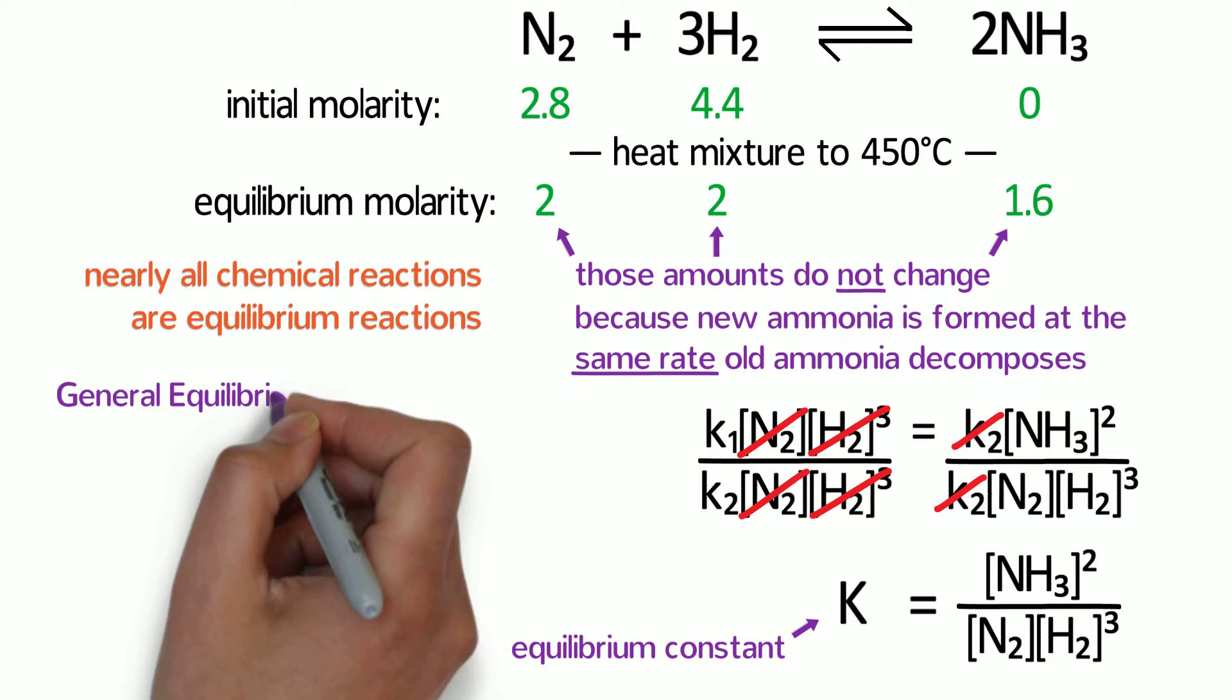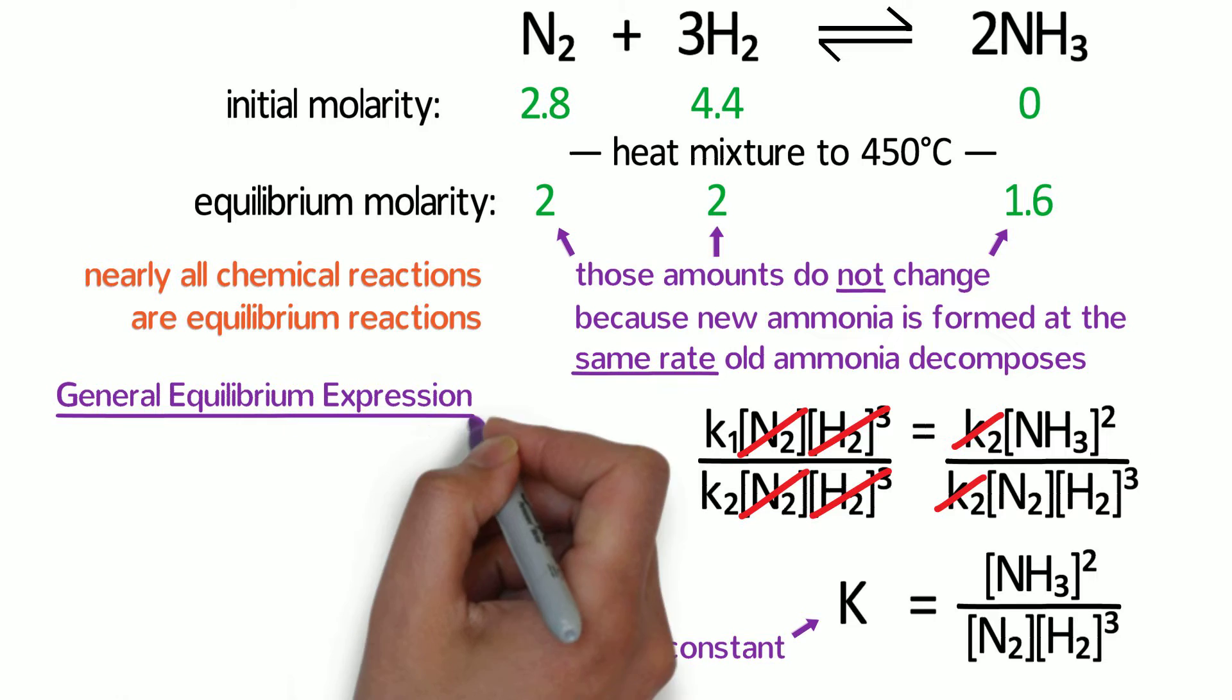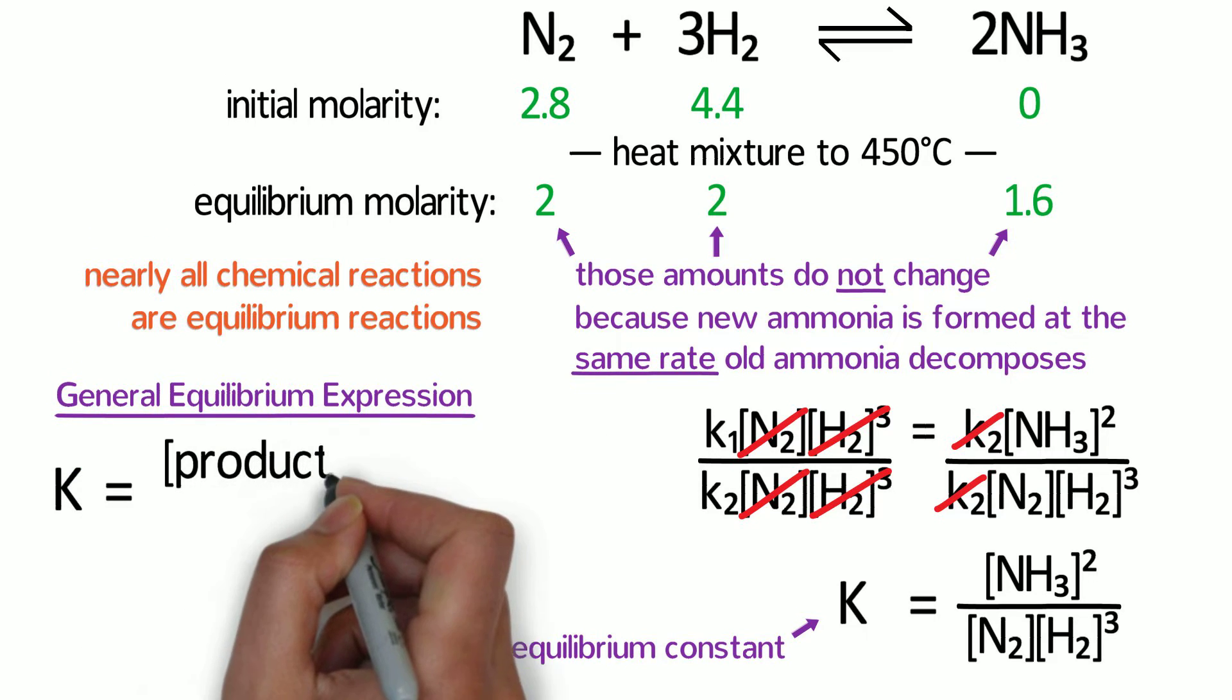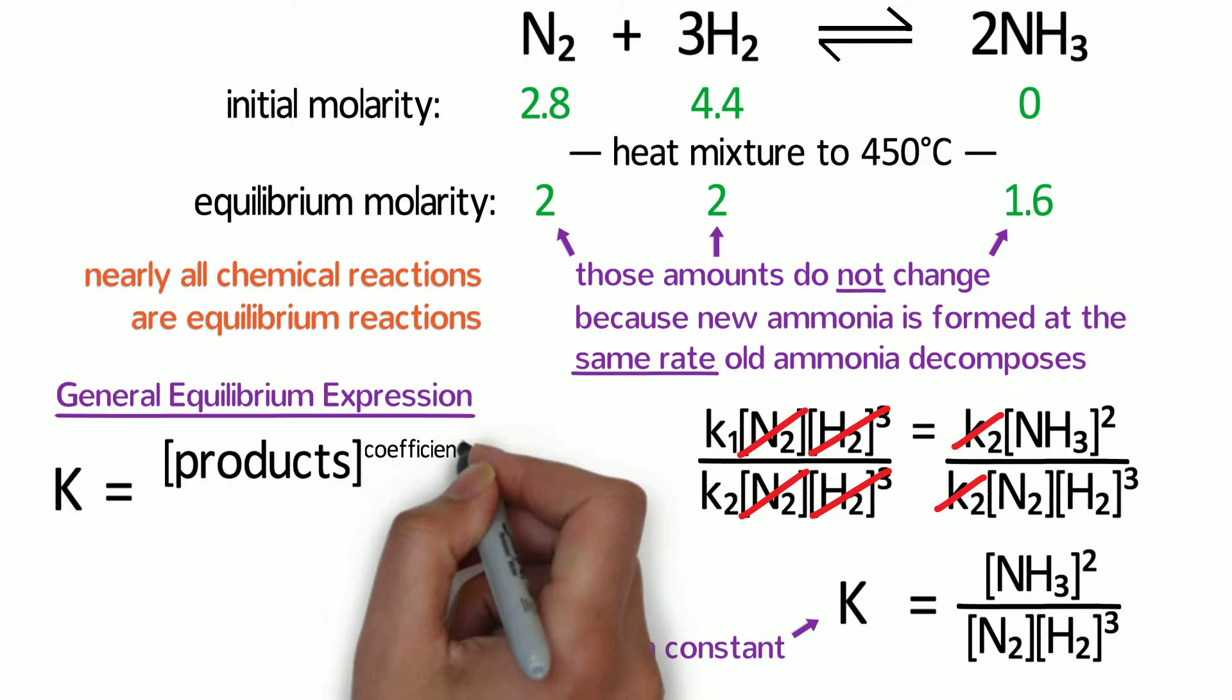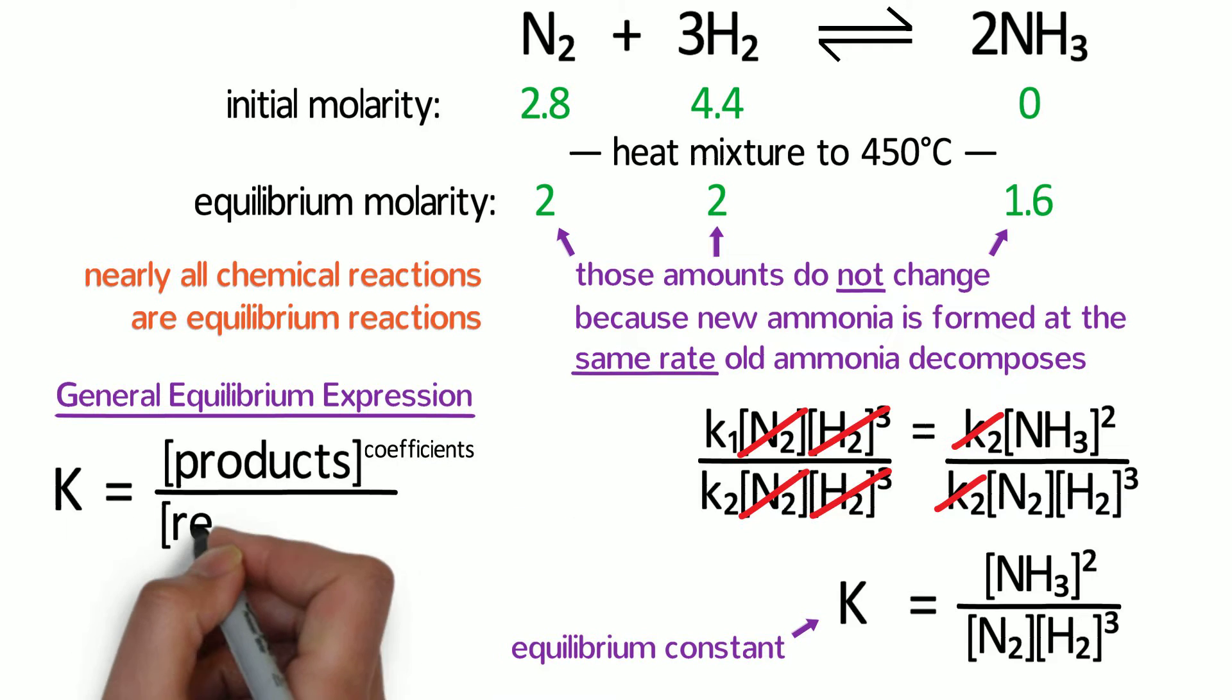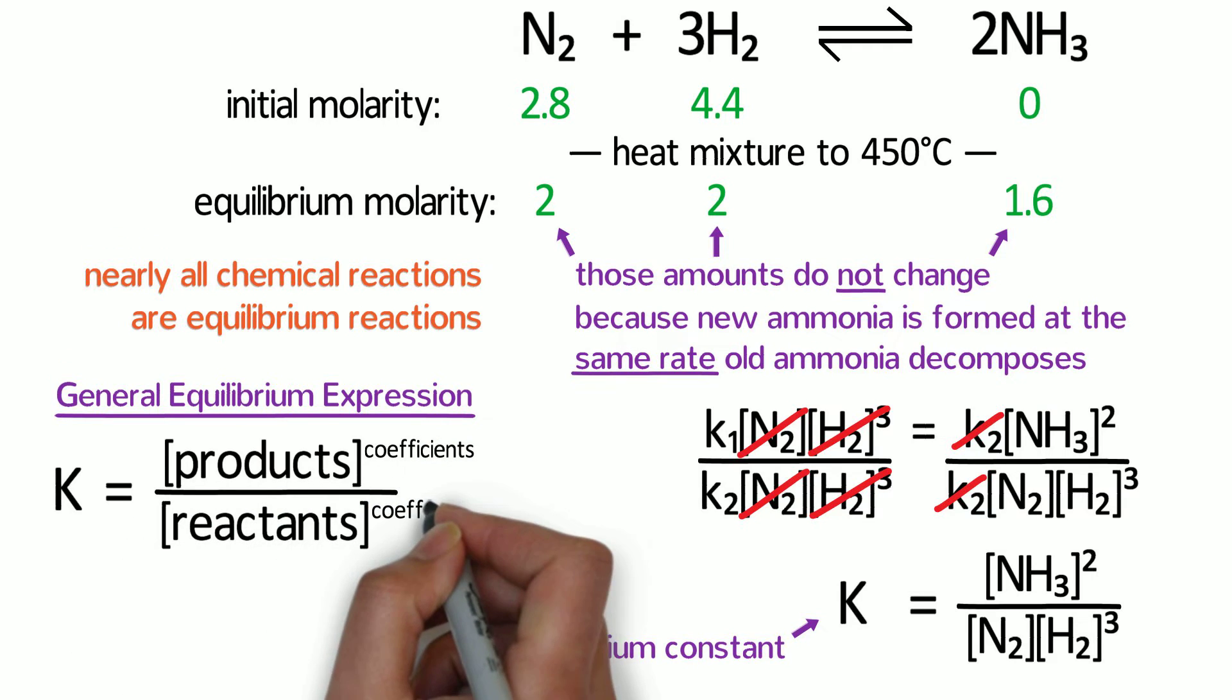In general, the equilibrium expression of any reaction is that the equilibrium constant is equal to the molarity of the products raised to the power of their coefficients divided by the molarity of the reactants raised to the power of their coefficients.